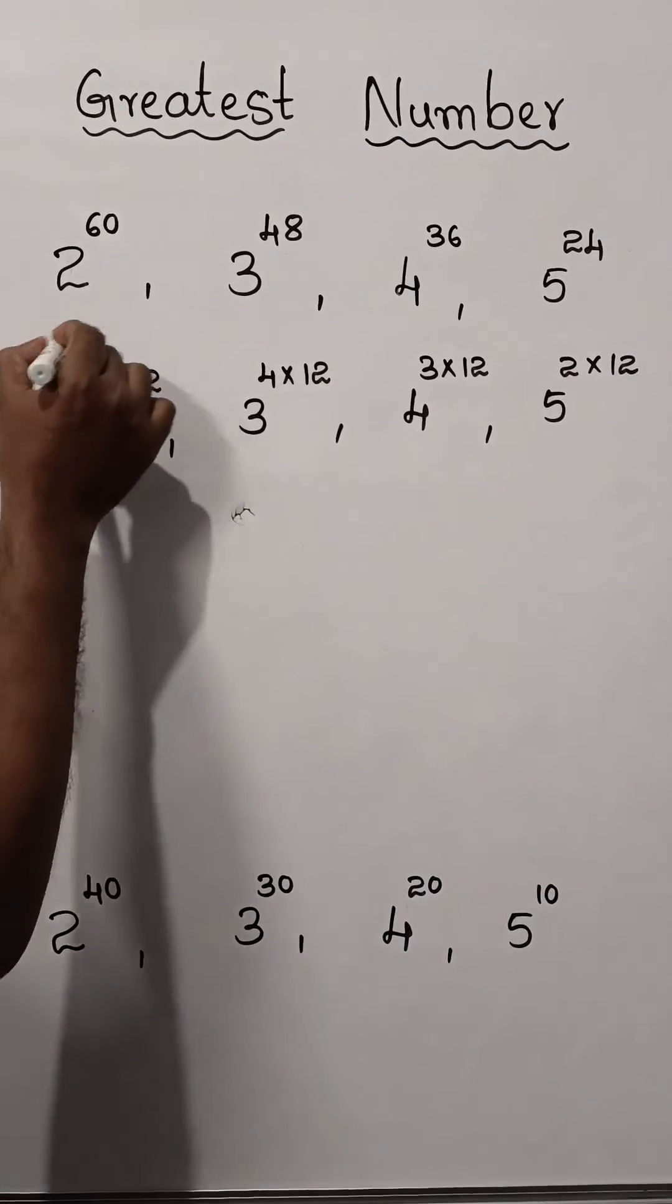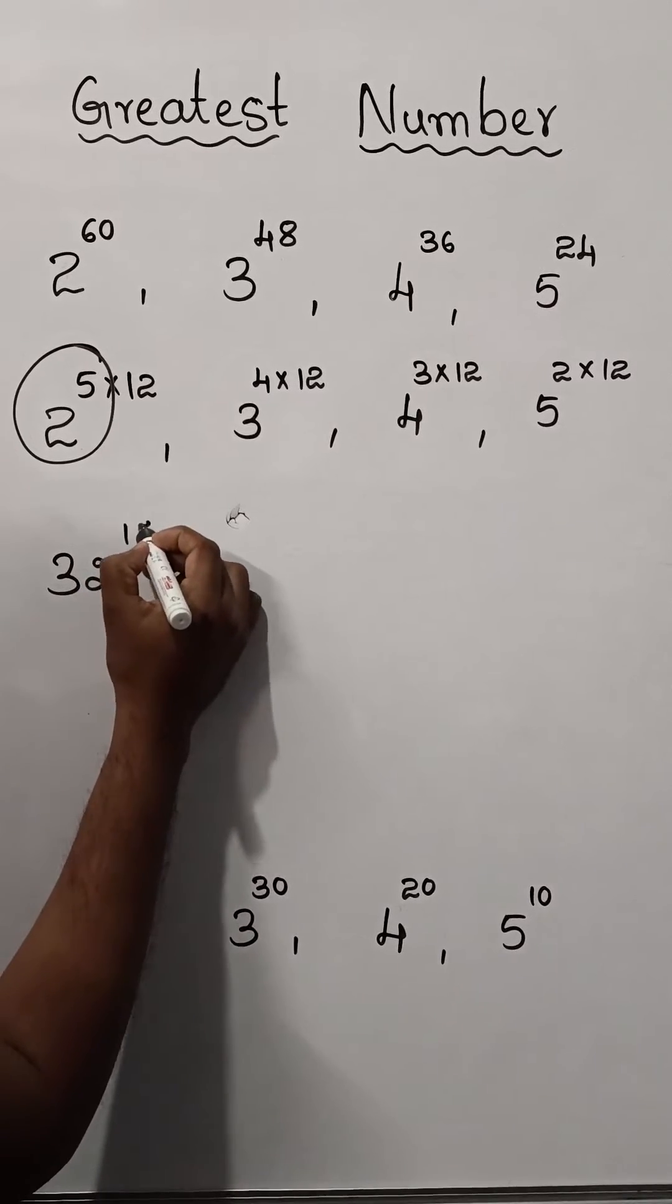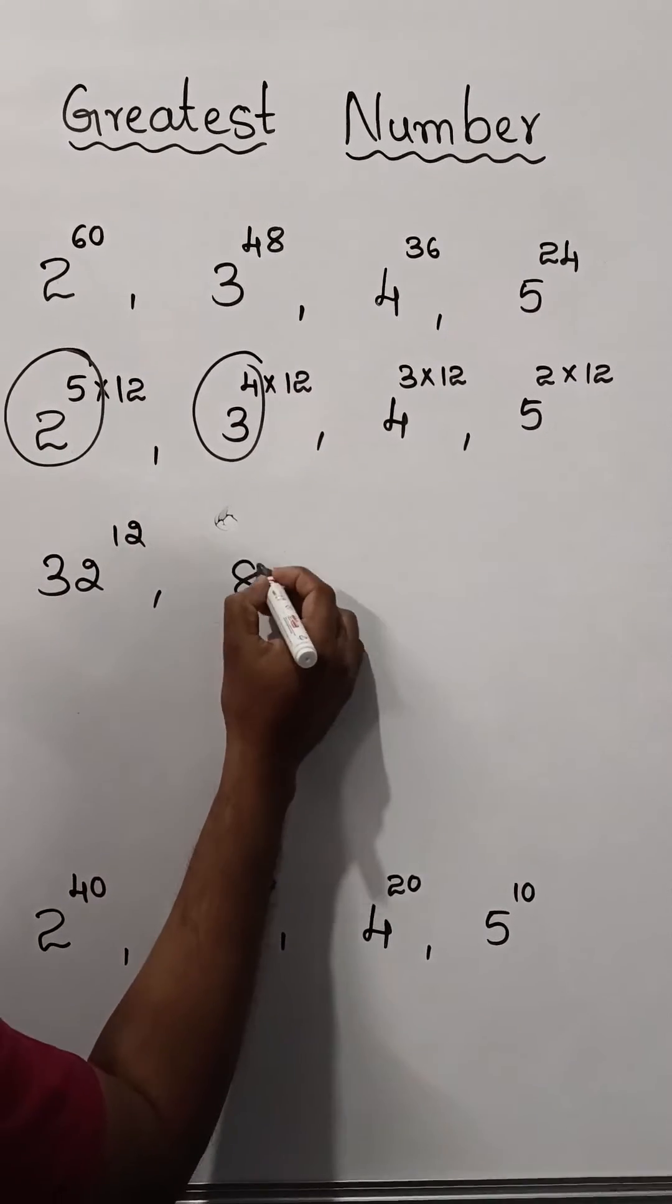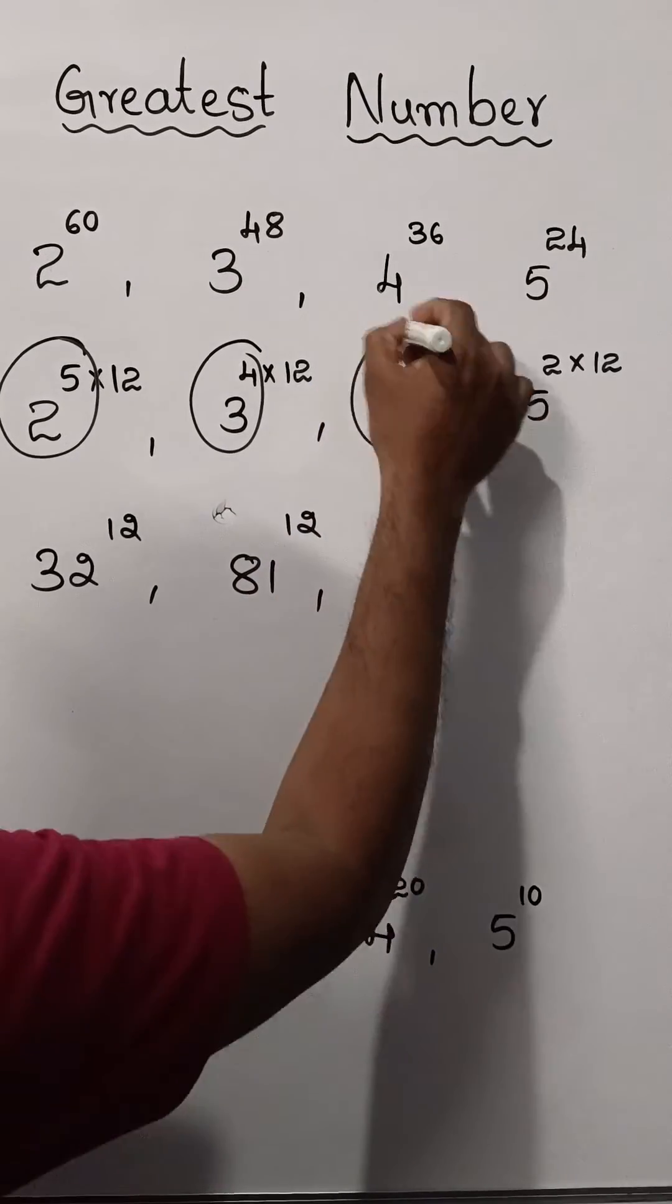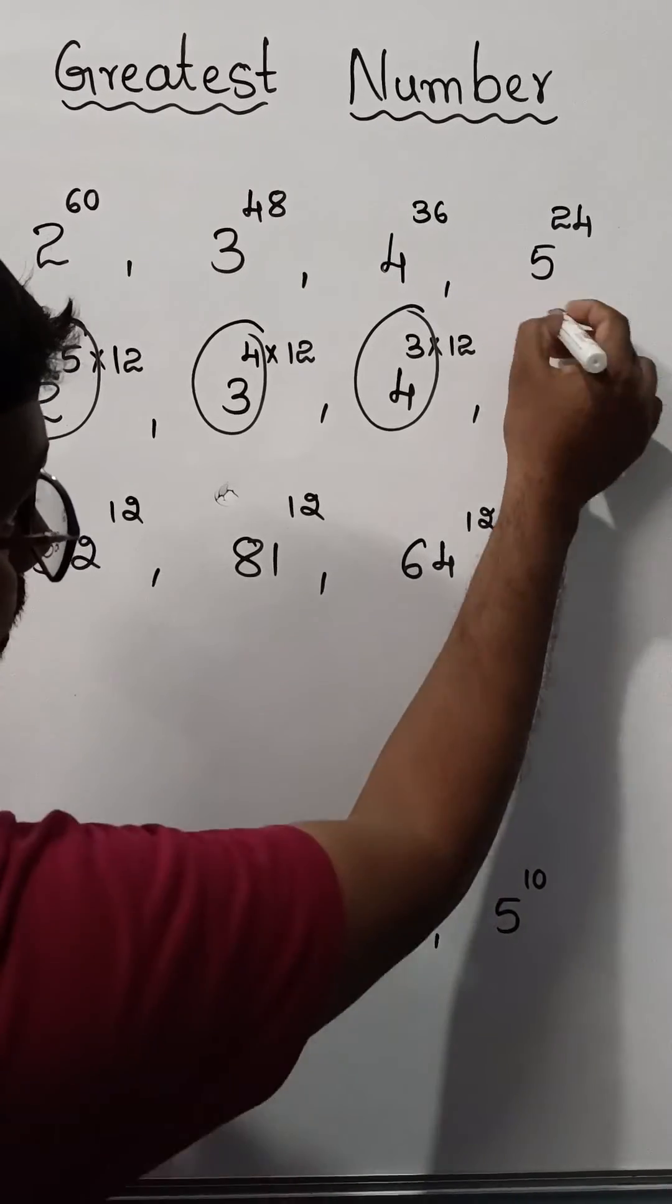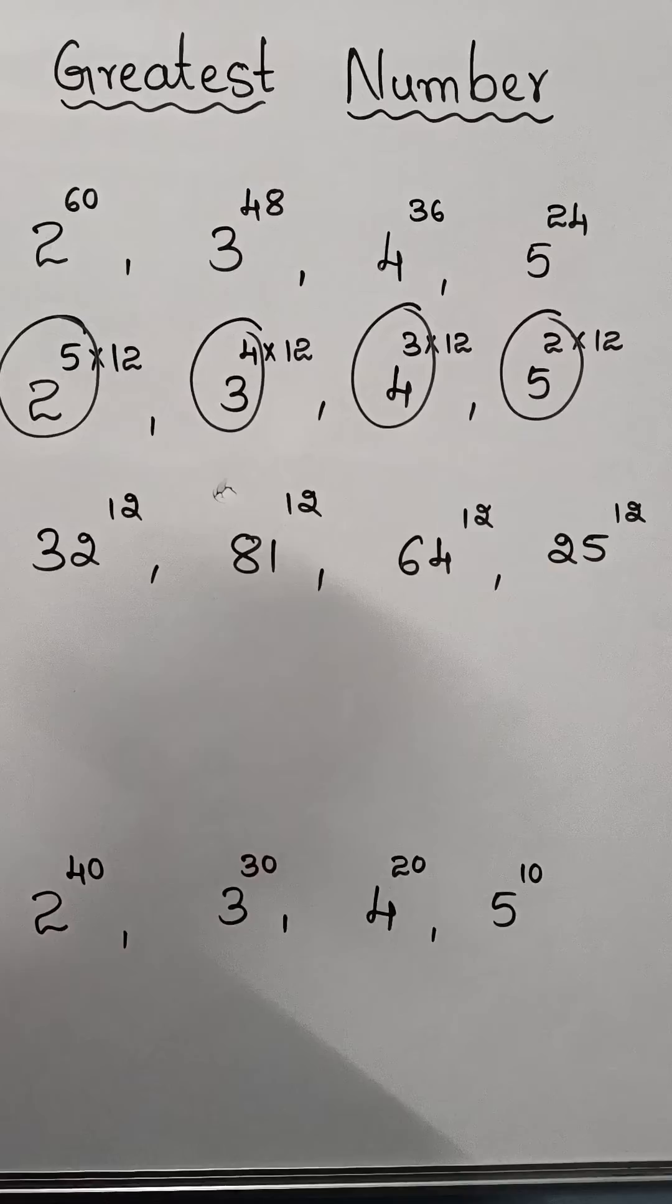Now, 2 to the power 5 is equal to 32 whole to the power 12, and 3 power 4 is equal to 81 whole to the power 12. 4 cube is equal to 64 whole to the power 12, and 5 square is equal to 25 whole to the power 12.